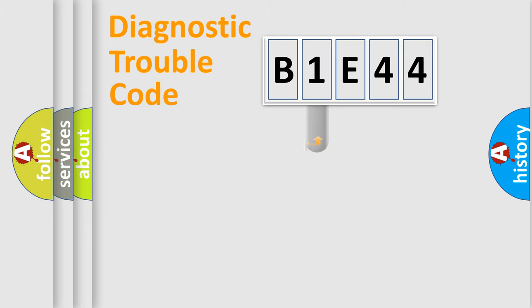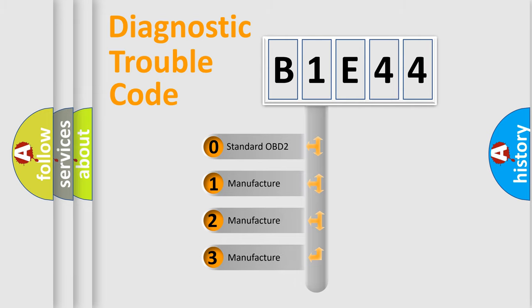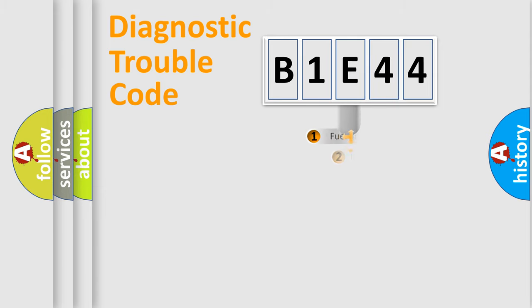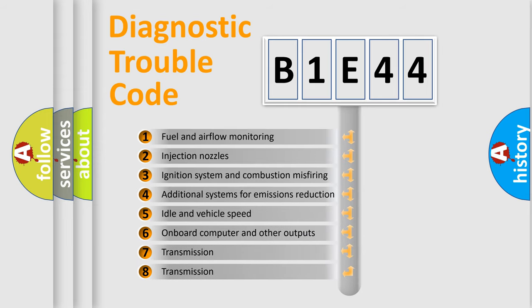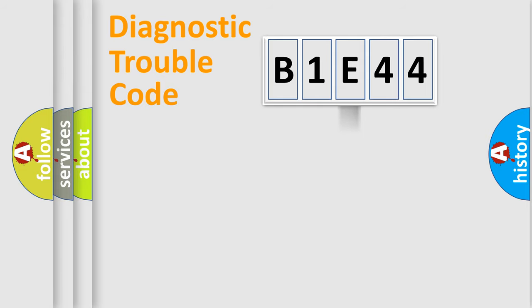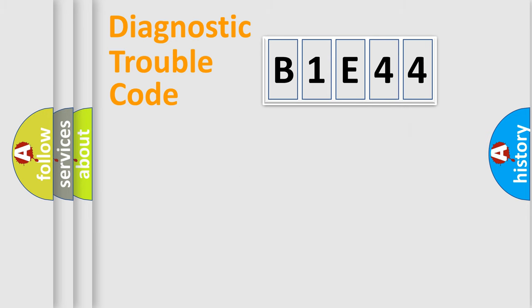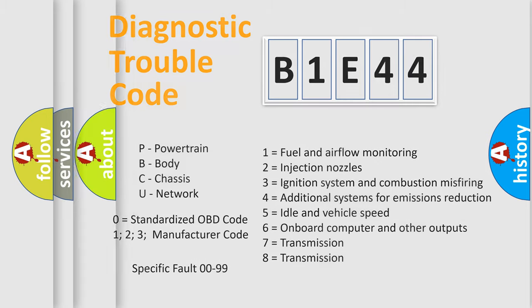This distribution is defined in the first character of the code. If the second character is expressed as zero, it is a standardized error. In the case of numbers 1, 2, or 3, it is a more specific car-specific error. The third character specifies a subset of errors. This distribution is valid only for the standardized DTC code, and only the last two characters define the specific fault of the group.